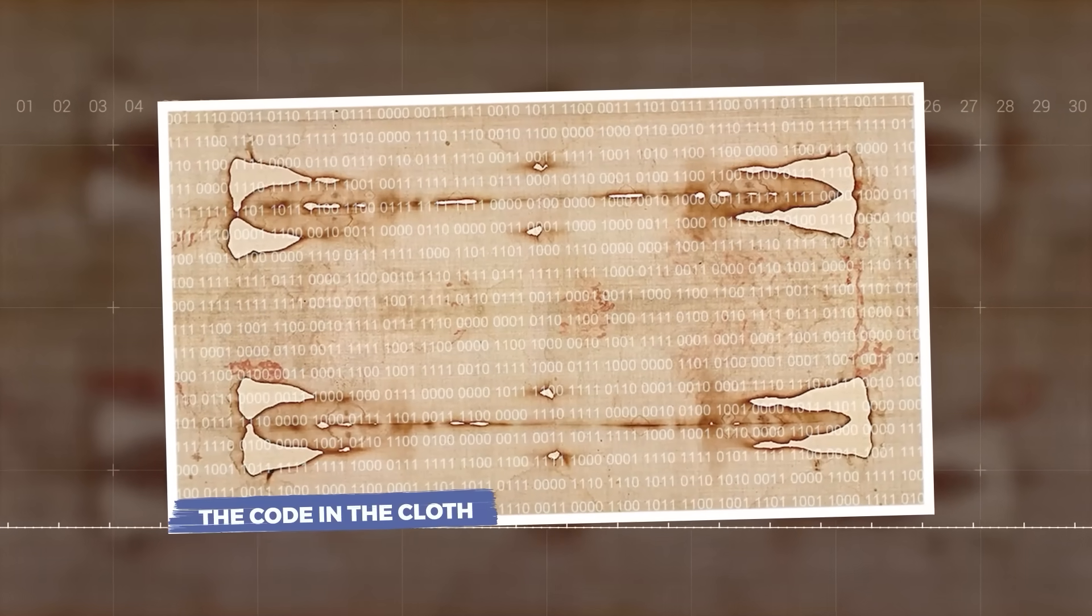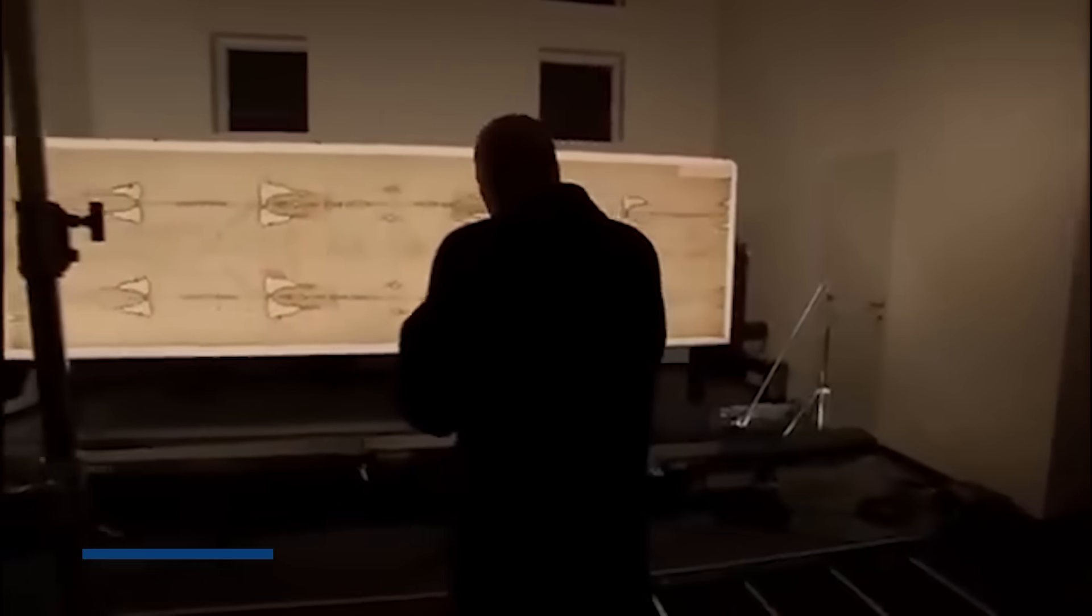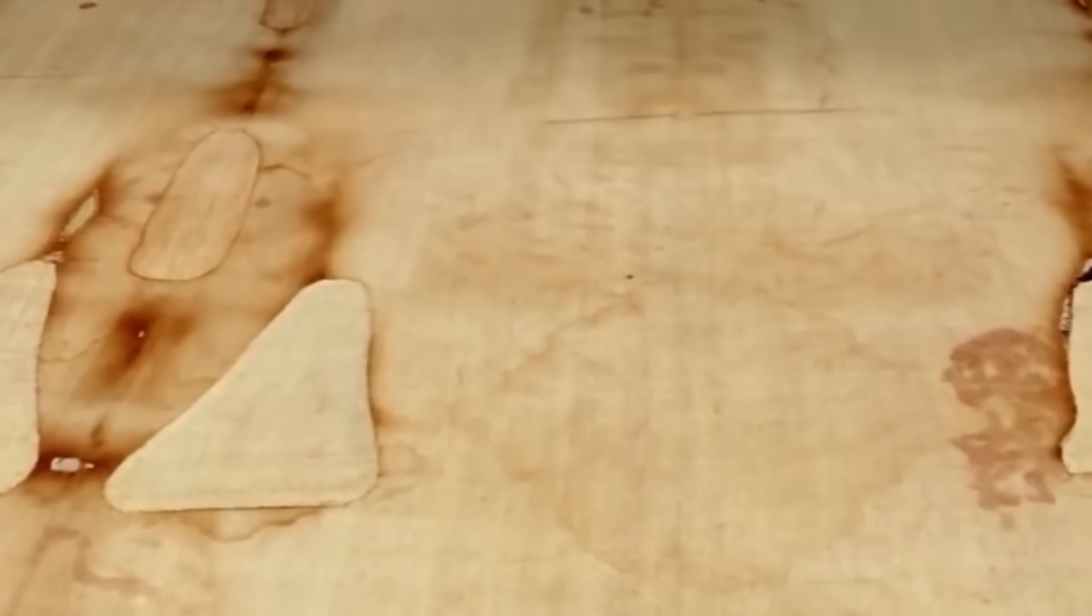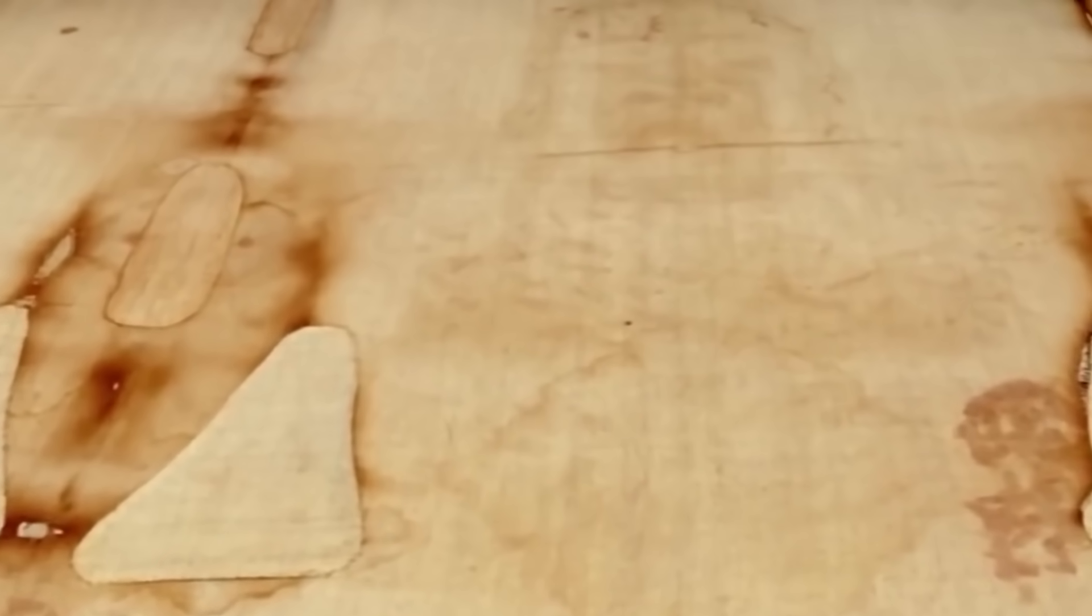Scientists are now trying to figure out what this impossible discovery means for one of history's most controversial artifacts. The code in the cloth. The shroud of Turin, a 14-foot-long cloth, bears the faint,